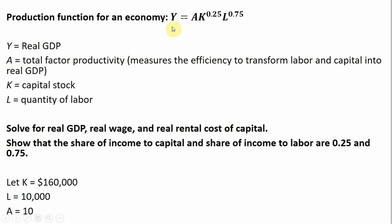We'll start with this equation where Y is real GDP or real income. A is total factor productivity, K is the capital stock, and L is quantity of labor. With this aggregate production function, we're going to solve real GDP, the real wage, the real rental cost of capital, and show that the share of income to capital and the share of income to labor are represented by these exponents.